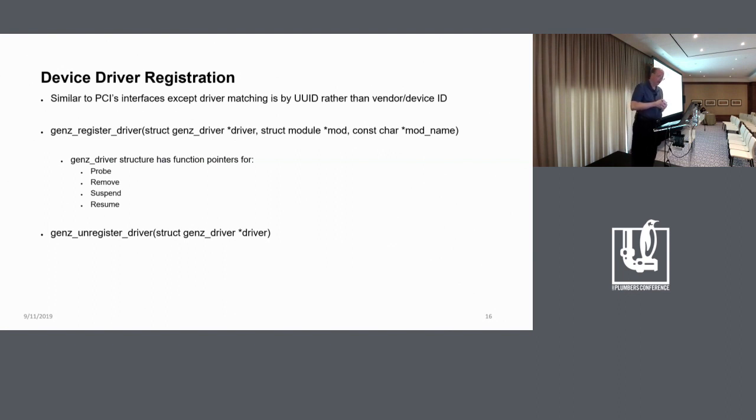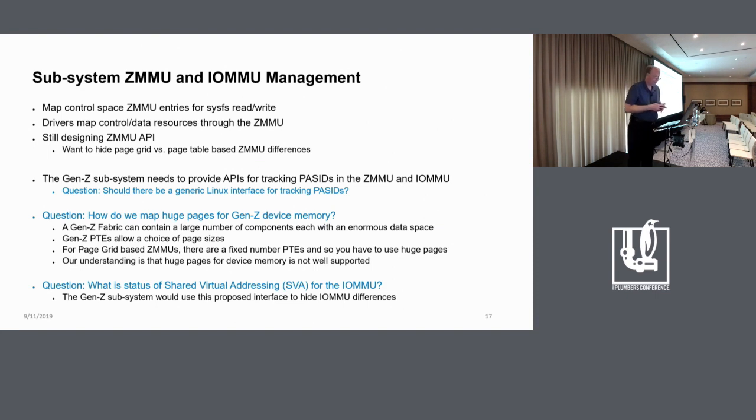Up in that upper block, blue block in the block diagram, for a native device, registration will have a Gen Z register driver function. Very much like the PCI version. In fact, I think it has identical parameter interface. The main difference between device driver registration for Gen Z versus PCI is that in the PCI world, you have vendor and device IDs. And in Gen Z, all the IDs are UUIDs instead. So the matching will be by UUID. And again, there will be a Gen Z driver structure passed in which has PCI-like probe, remove, suspend, resume kinds of function pointers. And again, there's an unregistered.